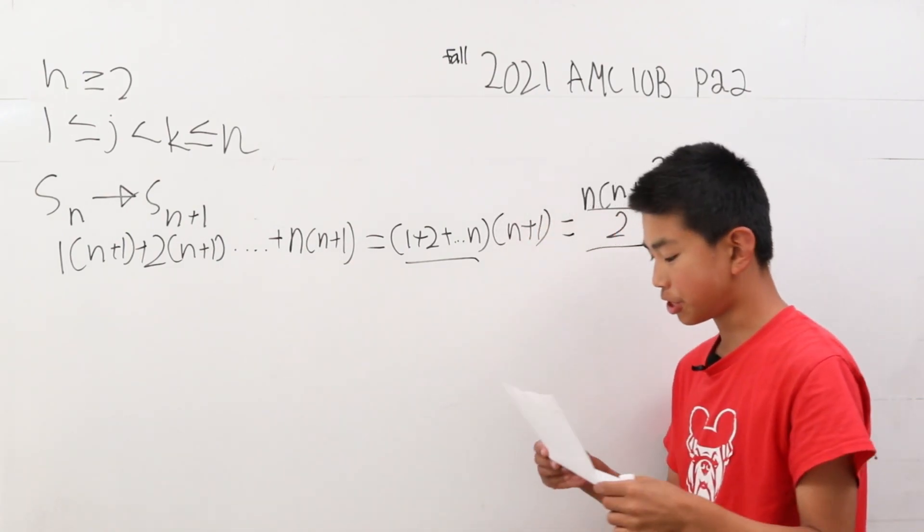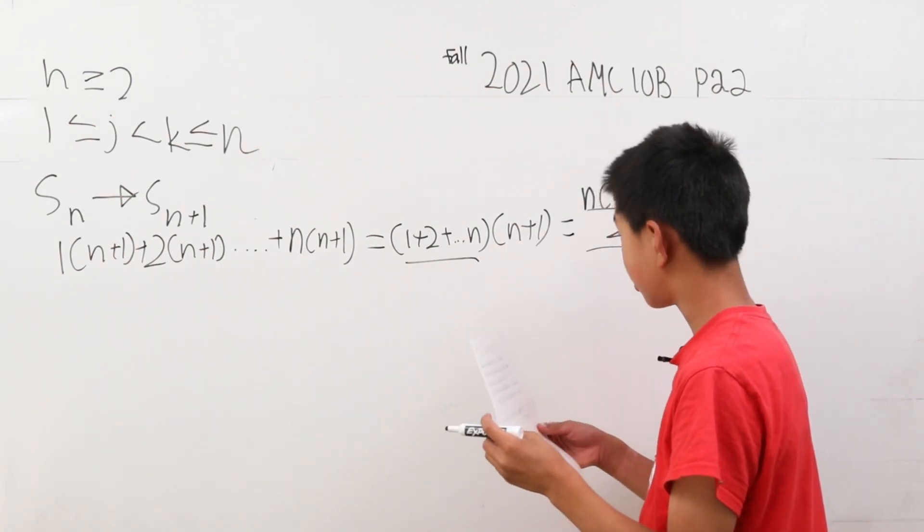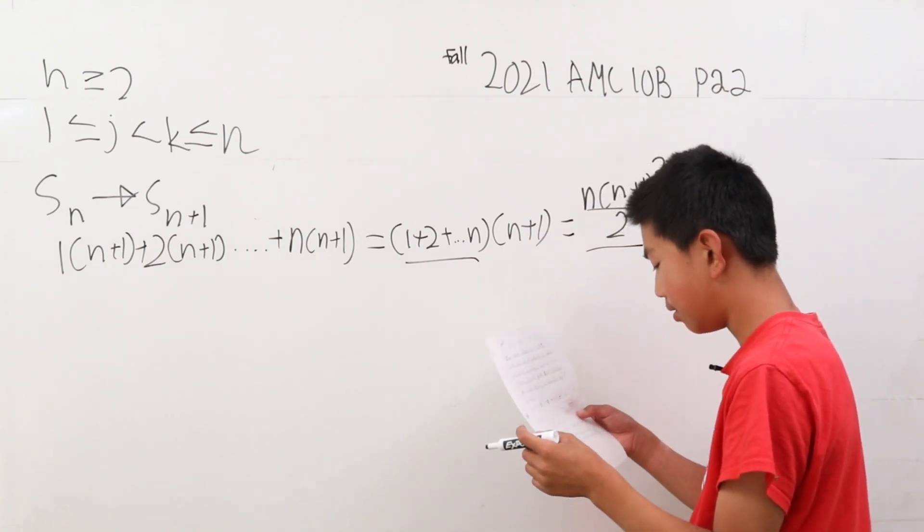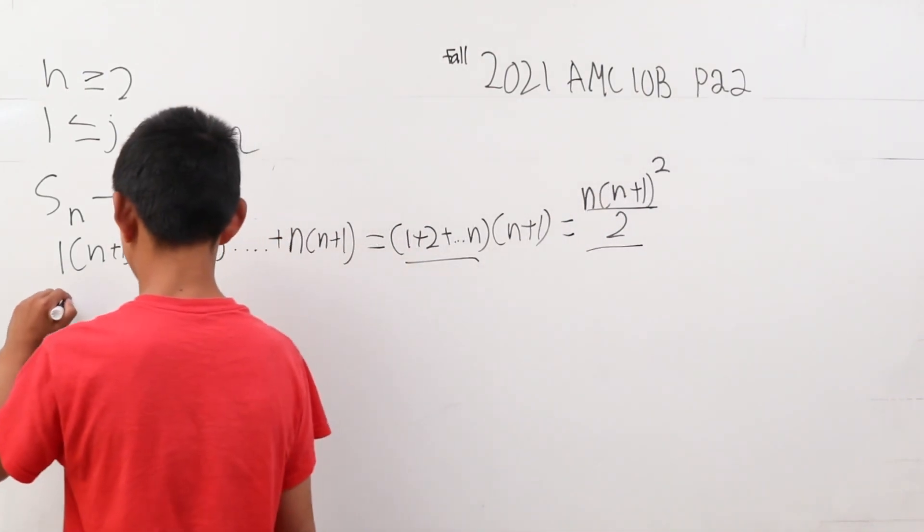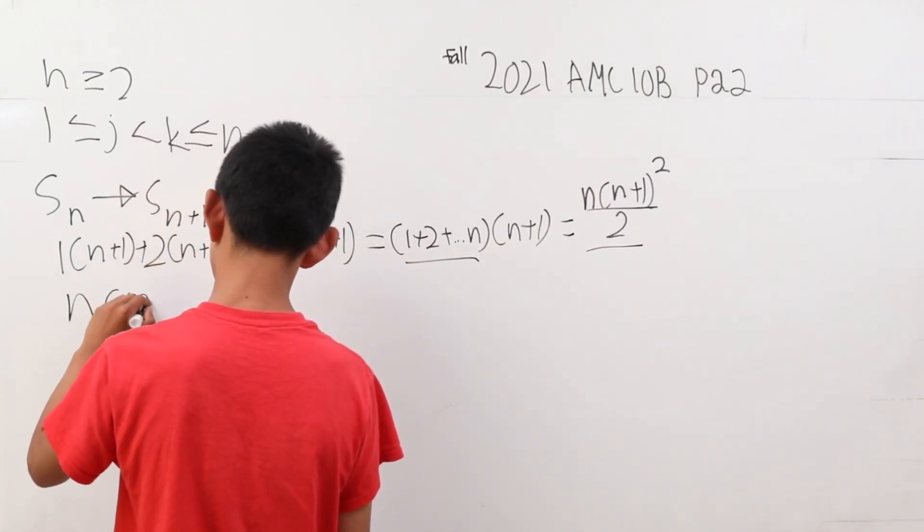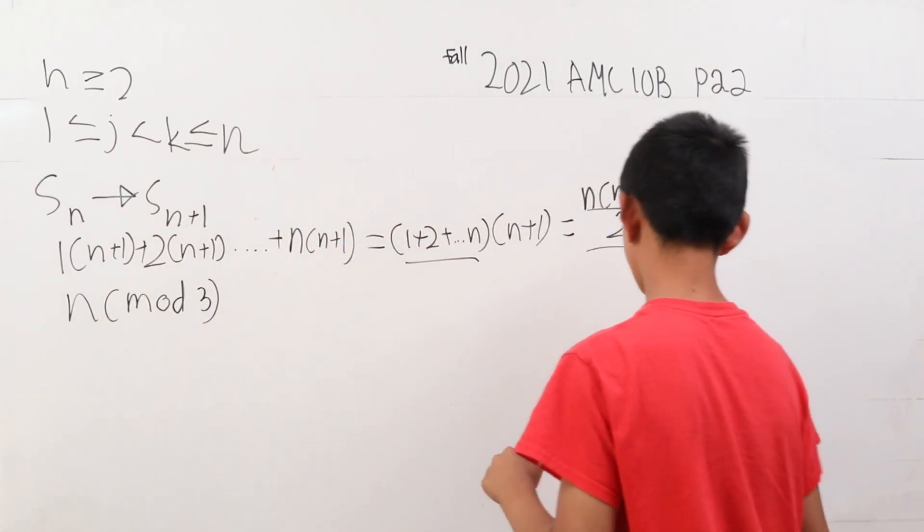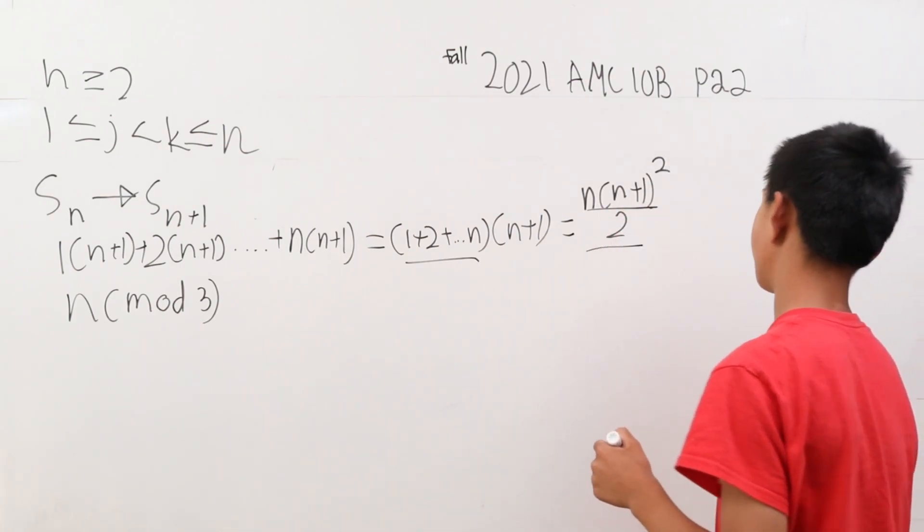The question states that we want to find the least 10 values of n such that s of n is divisible by 3. That means it's going to be in the form of n mod 3. Now, we notice something here. Let's just test out one value for n.